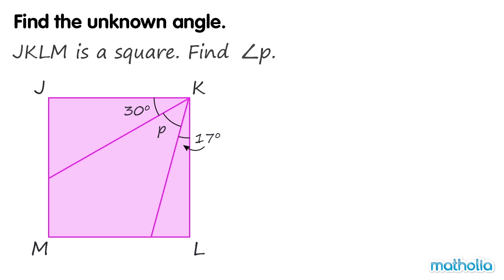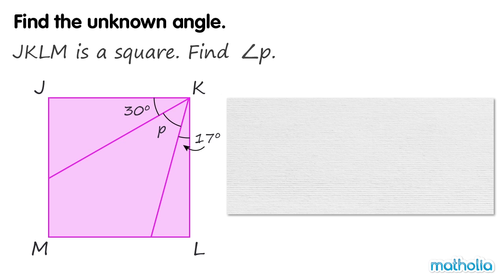Find the unknown angle. JKLM is a square. Find angle P. Angle JKL equals 90 degrees. So angle P equals 90 degrees minus 30 degrees minus 17 degrees.